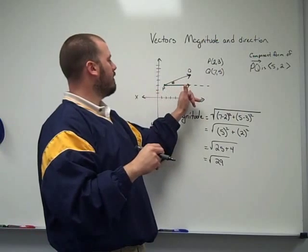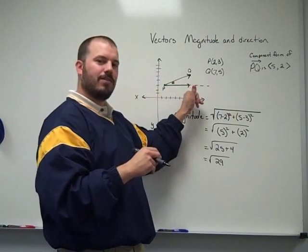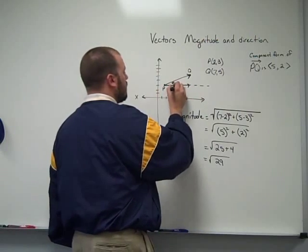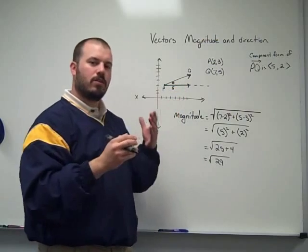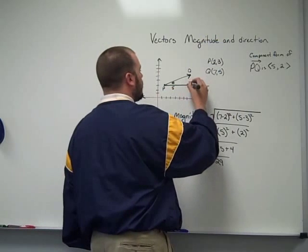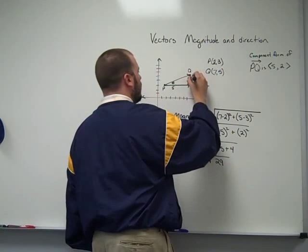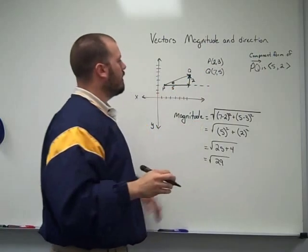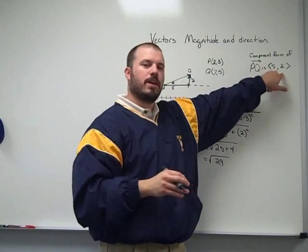From 2 to 7, that is 5 units. So our horizontal component of this vector is 5 units to the right. Our vertical component is 2 units up. Now that's the component form of the vector.